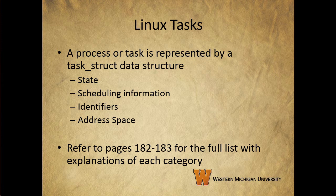A process or task in Linux is represented by a task_struct data structure, which includes various pieces of information about the task. The state is the execution state of the process — is it executing, ready, suspended, etc. Scheduling information is needed by Linux to schedule the process. Processes in Linux can be normal or real-time and they have a priority. Real-time processes are scheduled before normal processes, and within each category, relative priorities can be used. A counter keeps track of the amount of time a process is allowed to execute.